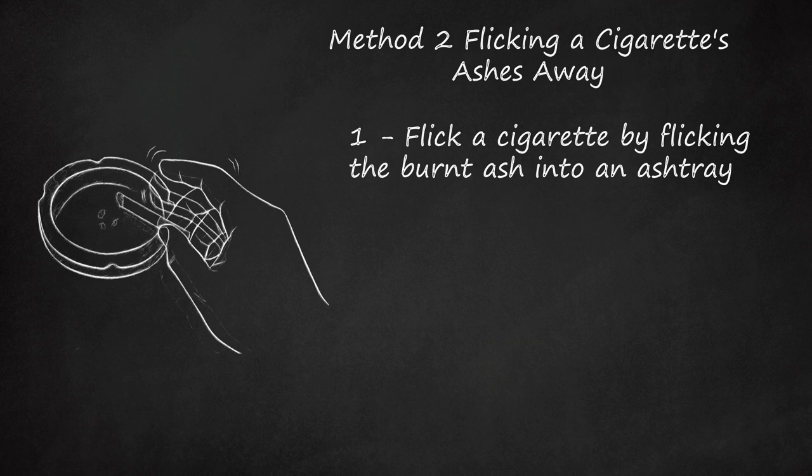You want to flick it when the ash looks like it might fall. Hold the cigarette between the thumb and middle finger. Lightly tap the cigarette over the ashtray with your index finger. This is how you flick cigarette ashes. The process is sometimes called ashing the cigarette.